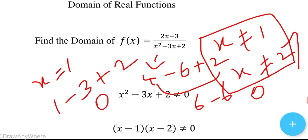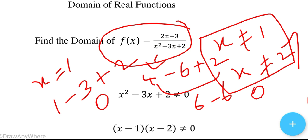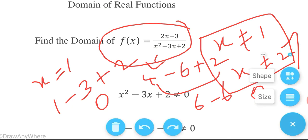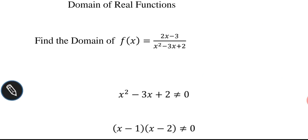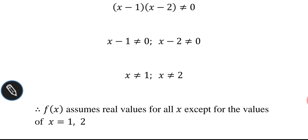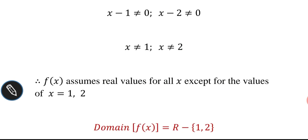So for x = 1 and x = 2, the given function attains infinity, which means the function does not exist at those values. Therefore x ≠ 1 and x ≠ 2. f(x) assumes real values for all x except x = 1 and x = 2. The domain of f(x) = ℝ - {1, 2}.